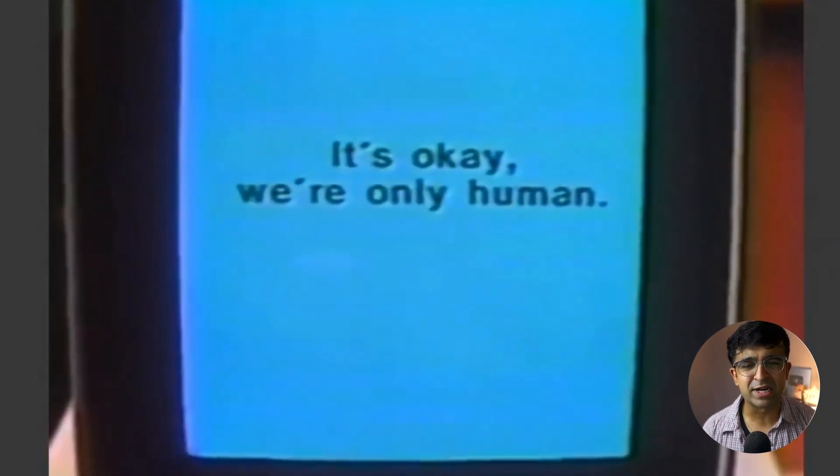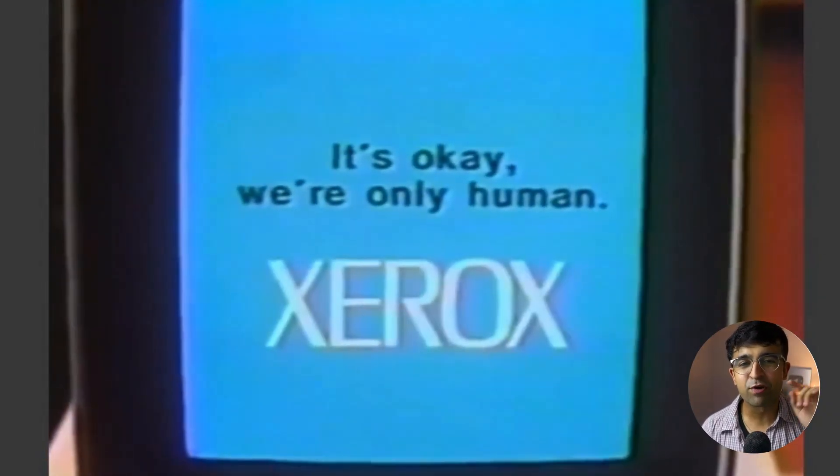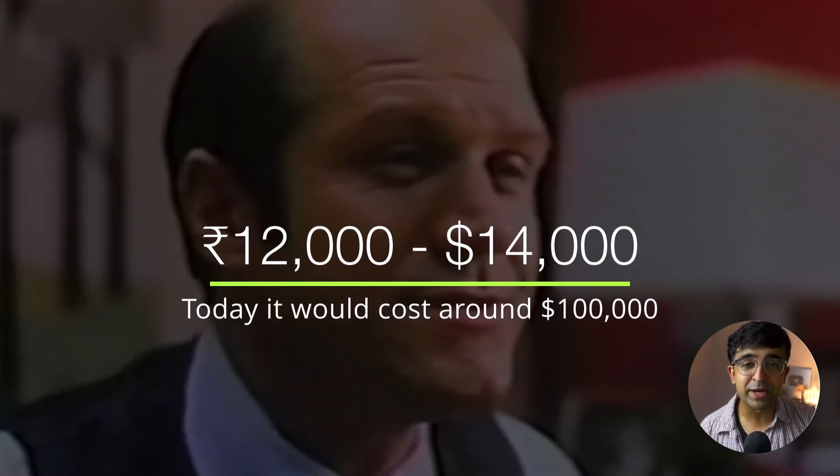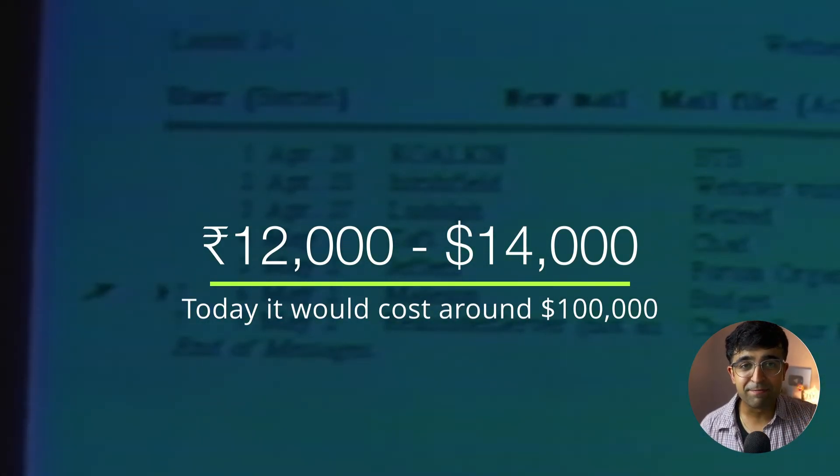This was a huge leap because people were typing in commands, and now they could just click on a folder to open files and read them. But as with many new things even today, this had a huge problem because of the price tag. Only 2,000 of these were sold because they priced it at what would be $100,000 in today's money — roughly 70 lakh rupees on one computer. That's crazy.